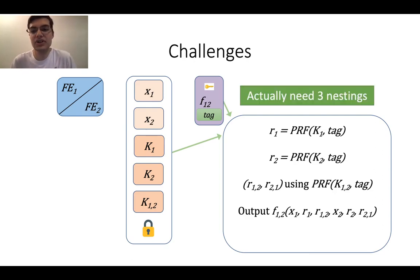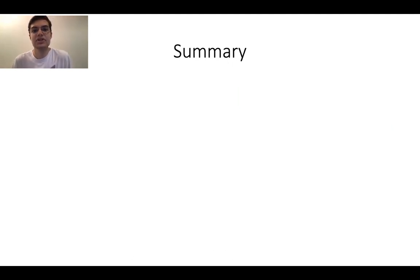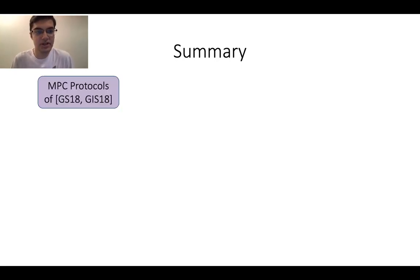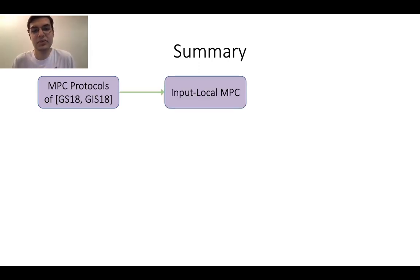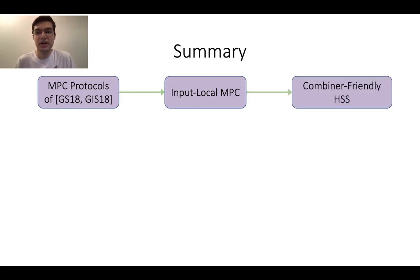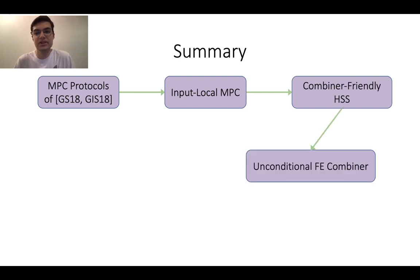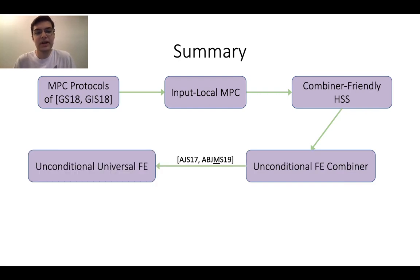In our actual construction we need three nestings — in this talk I only considered two for simplicity. To summarize bottom-up: we start with the MPC protocols of GS18 and GIS18 and modify them to make input local MPC. Then using input local MPC, we build a combiner-friendly homomorphic secret sharing scheme. Using this, we obtain our unconditional FE combiner. Finally, using the results of AJS and ABJMS, this immediately implies an unconditional universal FE construction. Thanks.